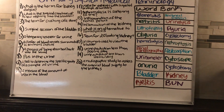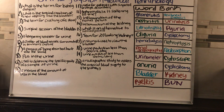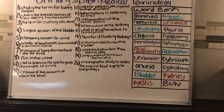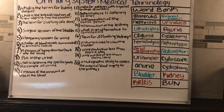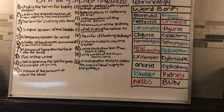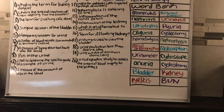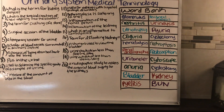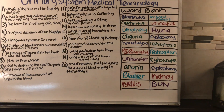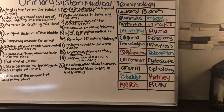Number six: a cluster of blood vessels surrounded by Bowman's capsule is called the glomerulus.